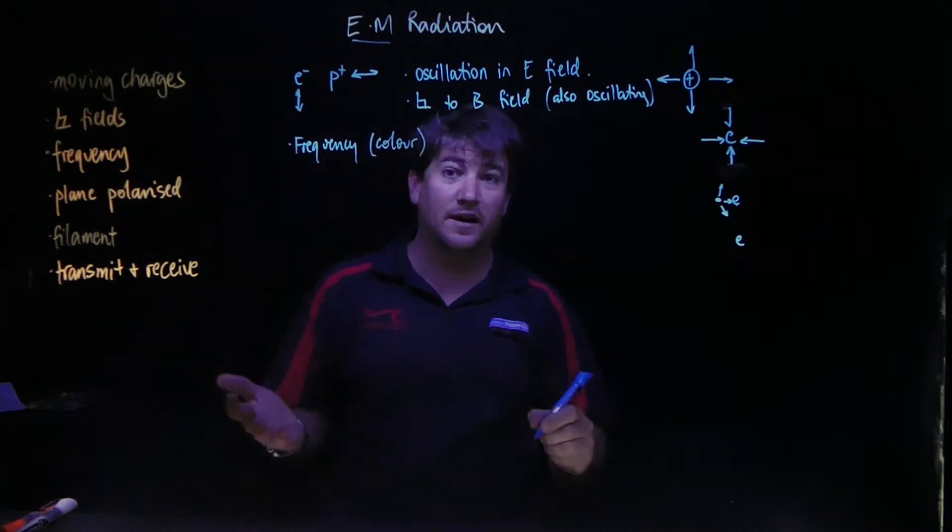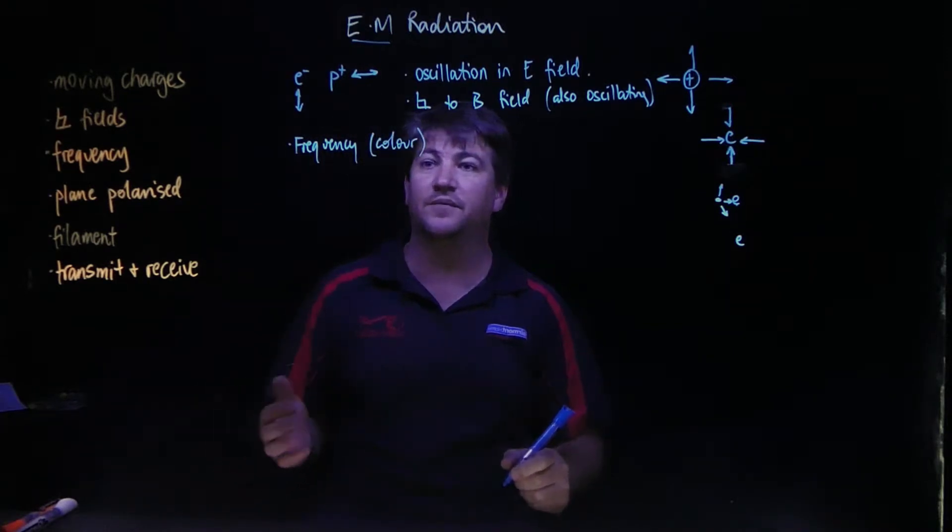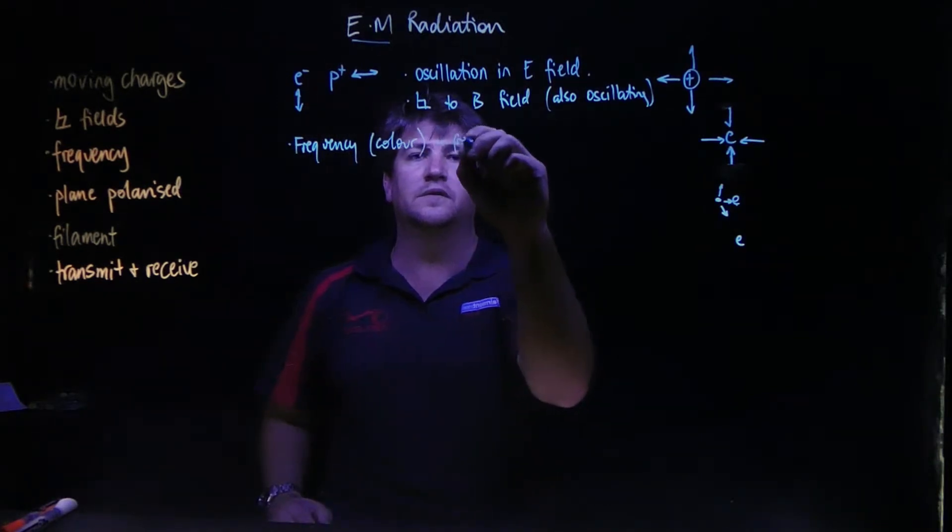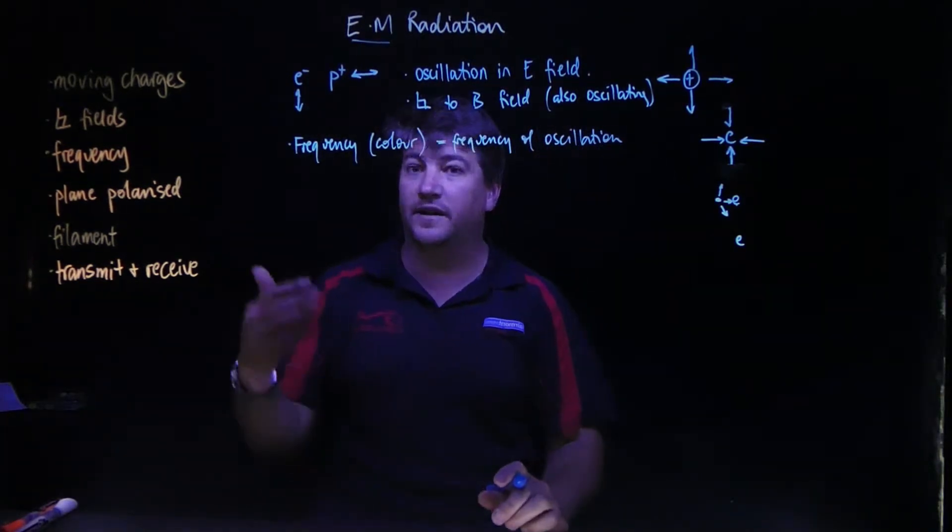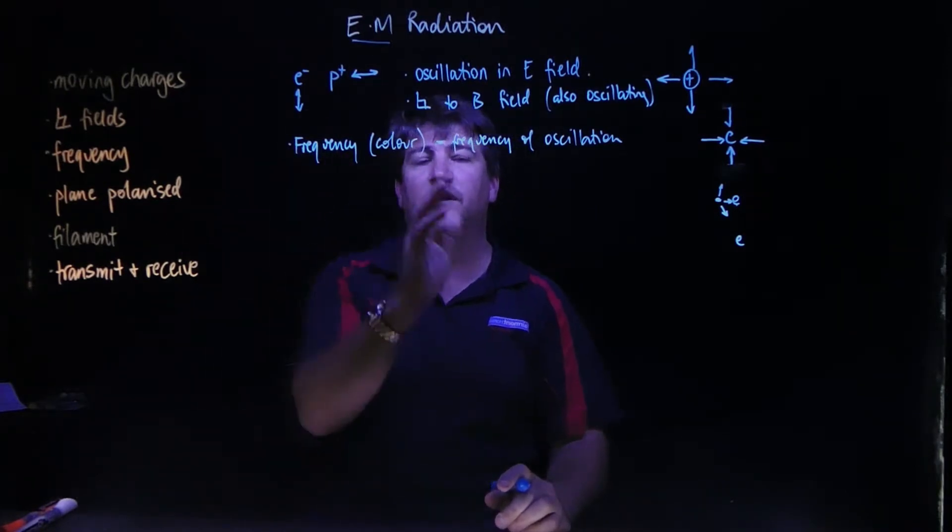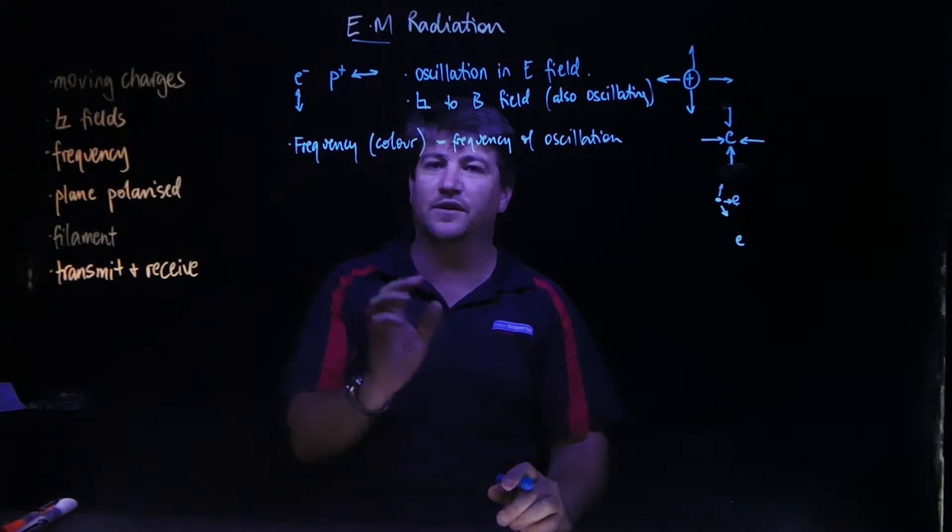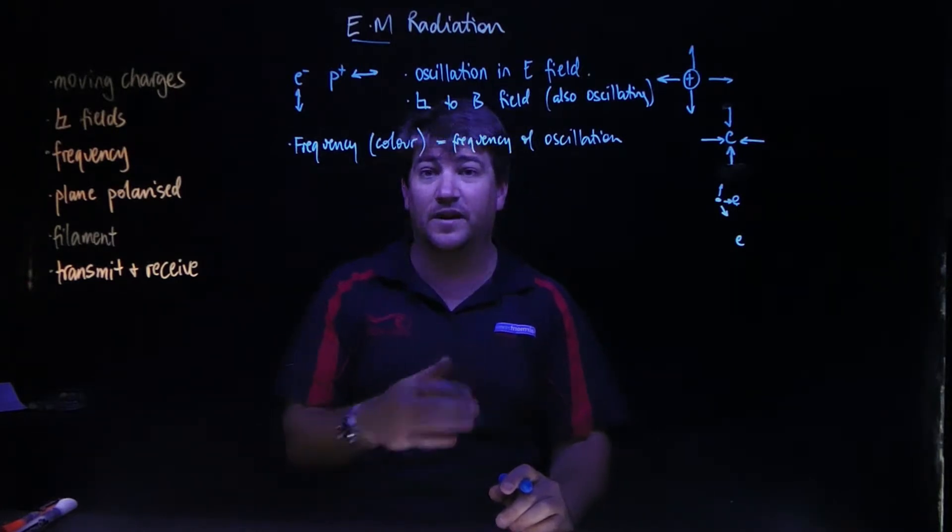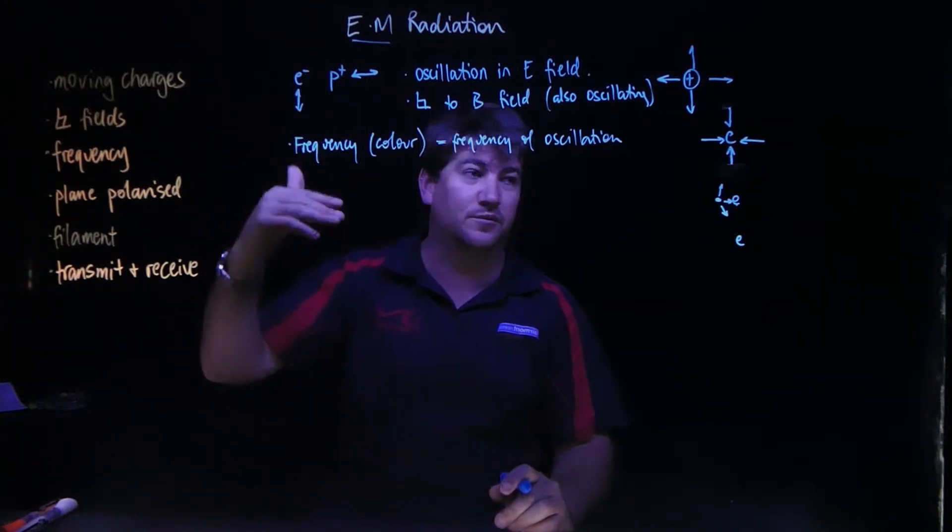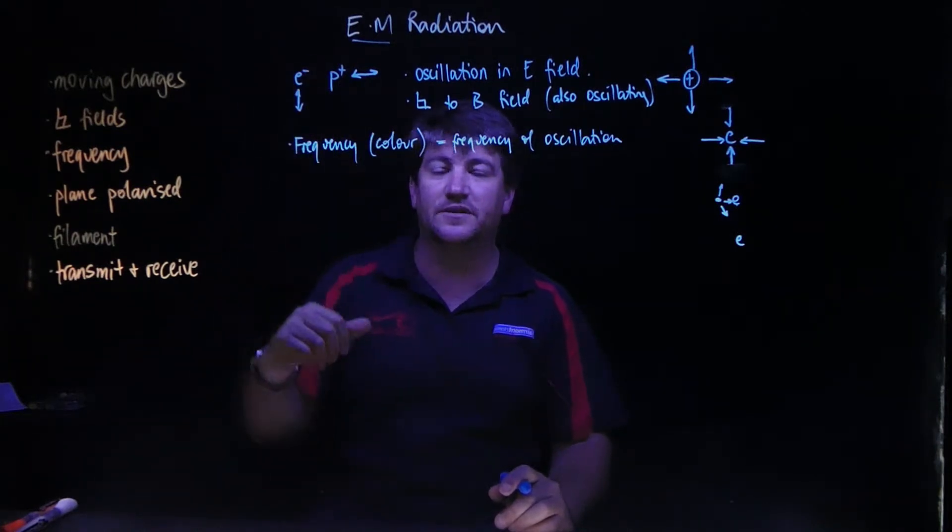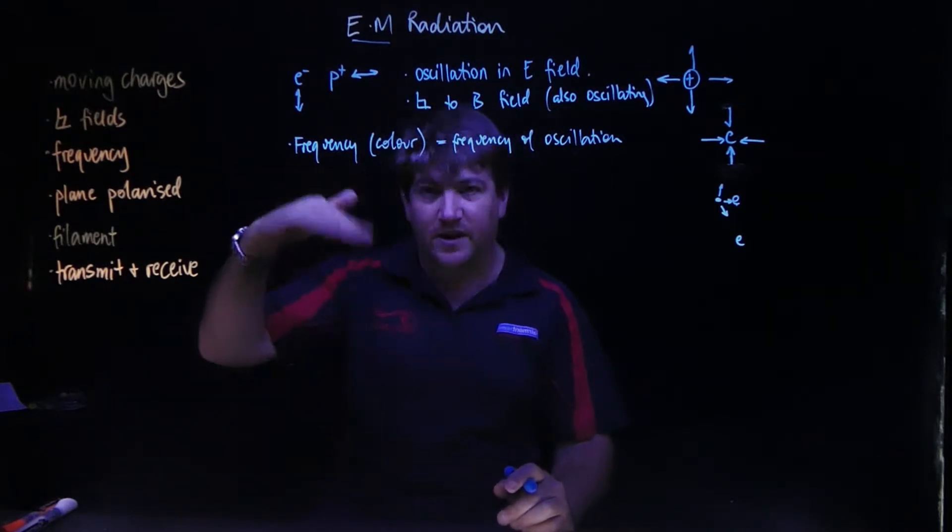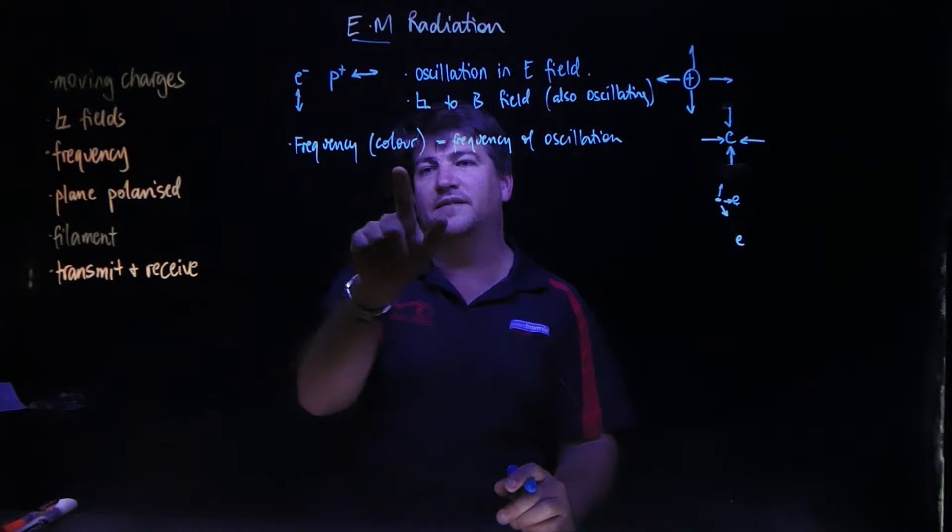The frequency or the color of this electromagnetic radiation is equal to the frequency that this thing's oscillating at. If our electron or proton is wobbling back and forwards at 1500 times a second, we're going to make a wave that's got a frequency of 1500 Hertz. As this charge is moving up and down, they're creating an electric field that's going up and down at the exact same rate.